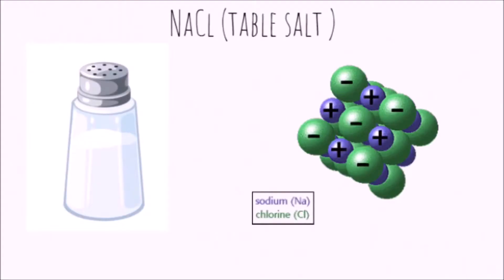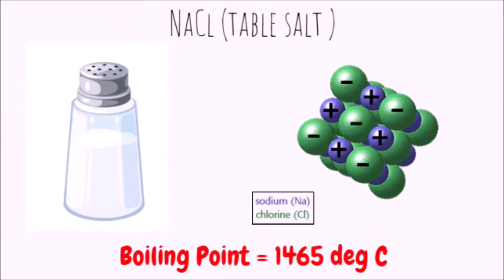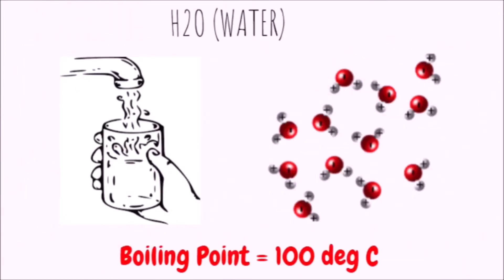A good example for this is NaCl or table salt. The boiling point for NaCl is 1465 degrees Celsius, and the boiling point of water is 100 degrees Celsius.